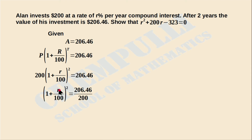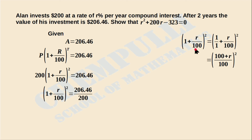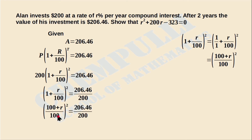Next, we simplify the expression (1 + R/100). Writing 1 as 100/100 and applying cross multiplication, we get (100 + R) / 100. So (1 + R/100)² becomes ((100 + R) / 100)², and we replace the left-hand side: (100 + R)² / 100² = 206.46 / 200.